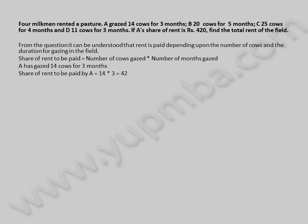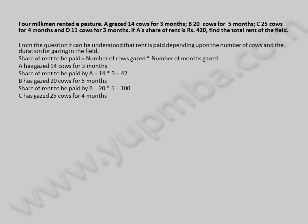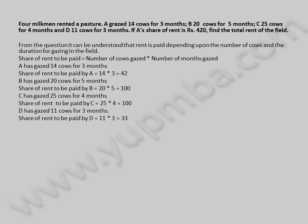A has grazed 14 cows for three months, so share of rent to be paid by A is 14 × 3 = 42. B has grazed 20 cows for five months, share of rent to be paid by B is 20 × 5 = 100. C has grazed 25 cows for four months, share of rent to be paid by C is 25 × 4 = 100. D has grazed 11 cows for three months, share of rent to be paid by D is 11 × 3 = 33. Ratio of shares of A : B : C : D = 42 : 100 : 100 : 33.